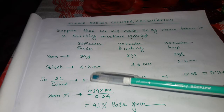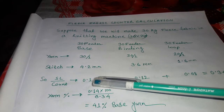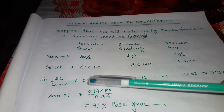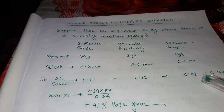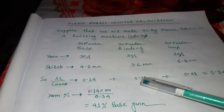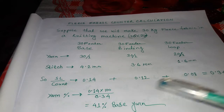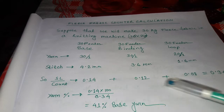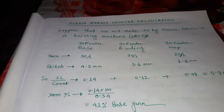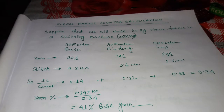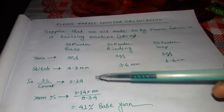The stitch length divided by count gives: base = 0.14, binding = 0.12, loop = 0.08. We then add these three ratio values together, giving a total of 0.34.